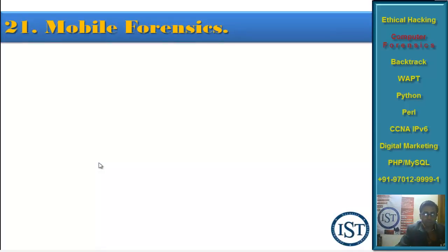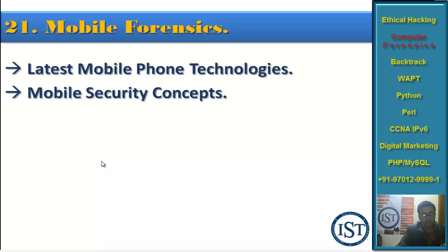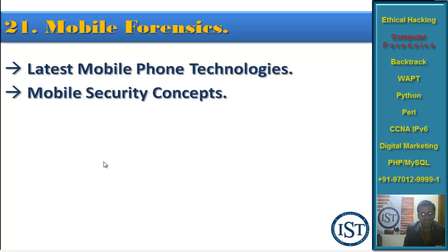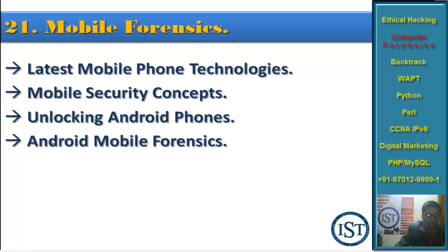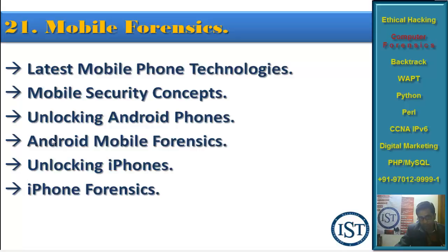Chapter 25 is Mobile Forensics — a really interesting chapter. Mobile forensics gives a lot of information regarding SMS and other mobile data. As a forensic investigator, I need to read SMS sent from the subject's mobile because they contain potential evidence to produce in court. We'll cover latest mobile technologies, mobile security concepts, how to unlock Android phones, Android mobile forensics, iPhone forensics, and tools demonstration.